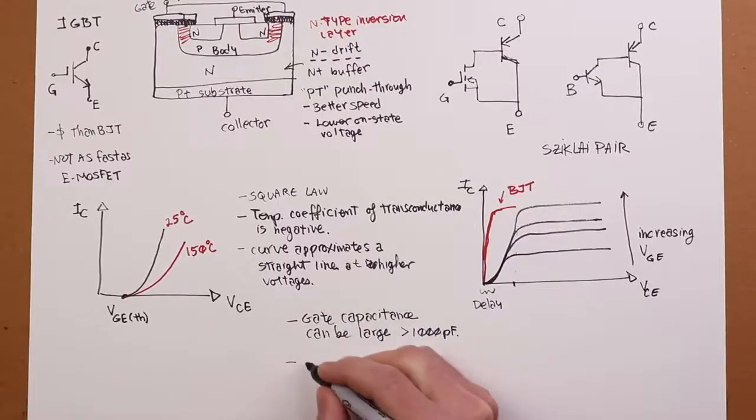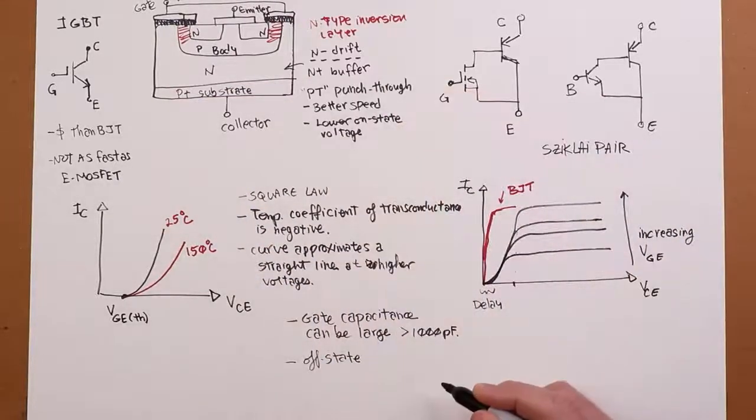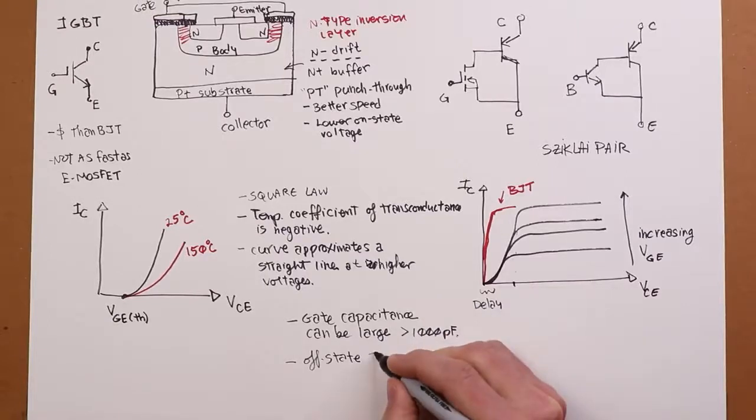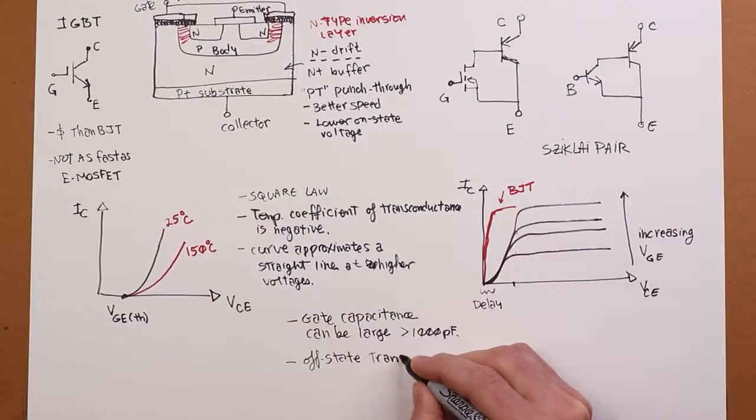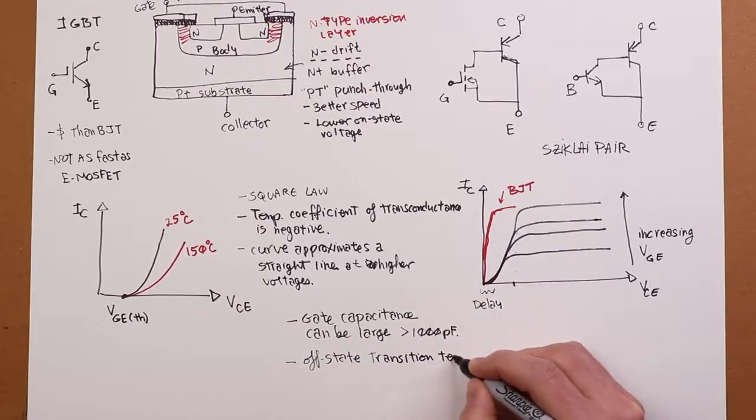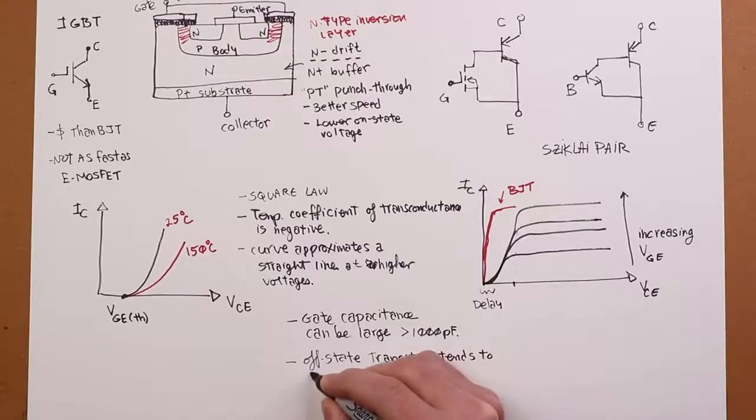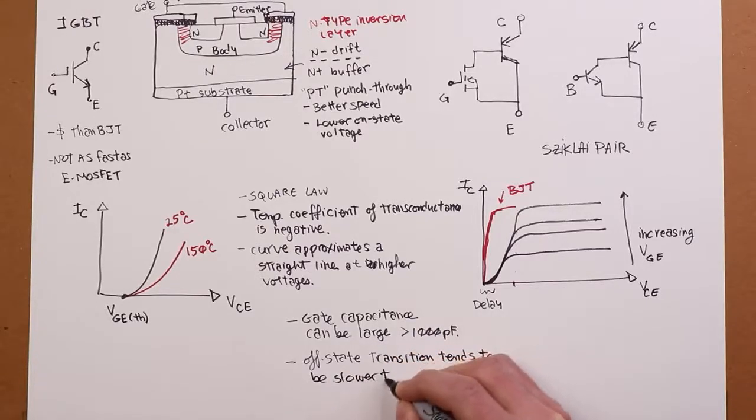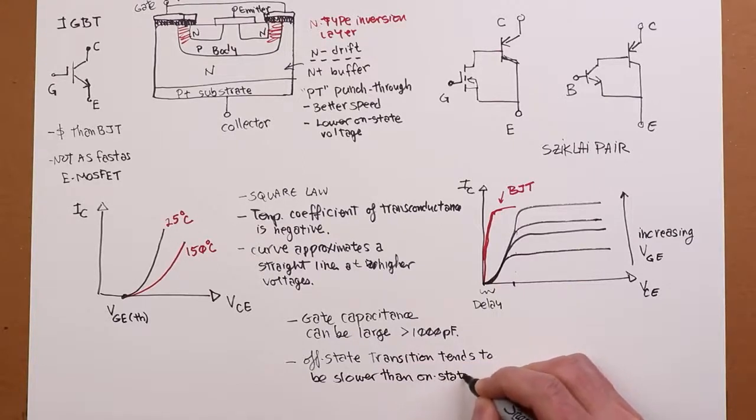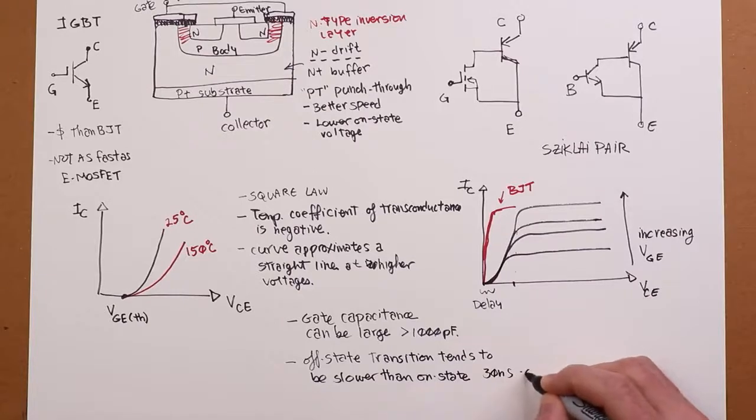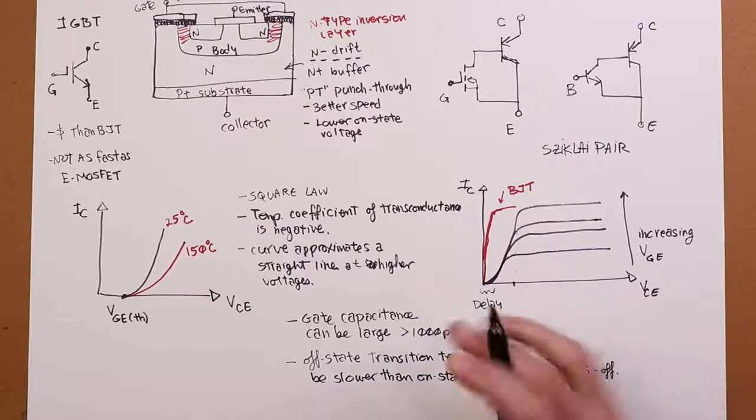The other thing is that the off-state transitions, so when we're doing switching, because that's likely what we're going to be doing with this, when we're switching this, the off-state transition, in other words, the delay time plus the fall time, tends to be slower than the on-state. Now, that might be like a three-to-one ratio. In other words, it might be, let's say, 30 nanoseconds for on and 100 nanoseconds for off. Just as an example. Okay, so we have an asymmetry there.